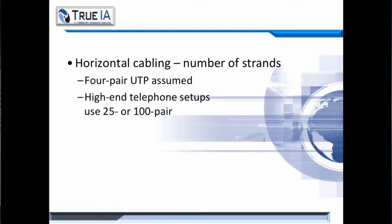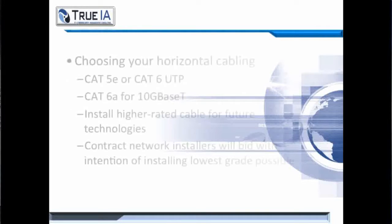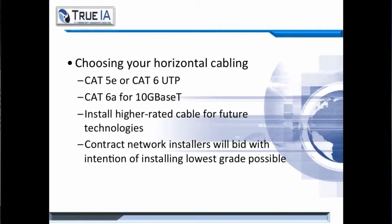Your horizontal cabling will consist of a number of strands. Four-pair UTP is kind of assumed to be the standard. However, for high-end telephone setups, they do make 25 and 100-pair UTP. Understand when you're choosing your cabling, you need to understand what the network requirements are. Do you need cat5e or do you need cat6? Do you need fiber? And if so, what type? It's always a good idea when installing physical attributes to a network to do what we call future-proofing — install a higher rated cable than what is needed today to protect against future requirements.